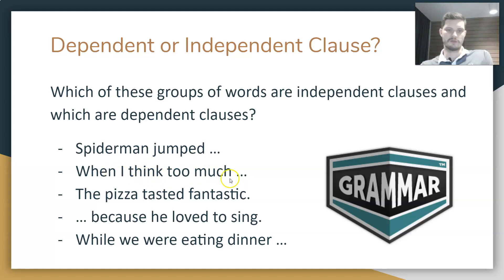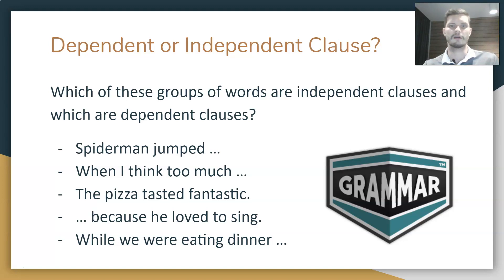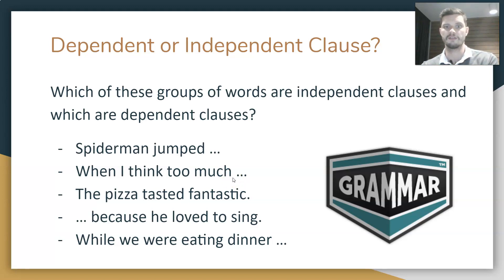'When I think too much.' Does it have a verb? Yes — 'think.' Does it have a subject? Yes — 'I.' Does it express a complete thought? No, it does not. When I think too much — what happens? I don't know. The full sentence might be: 'When I think too much, I get headaches.' 'I get headaches' is an independent clause — it expresses a complete thought and can act as a full sentence. But 'when I think too much' is a dependent clause; it depends on an independent clause to form a complete sentence.